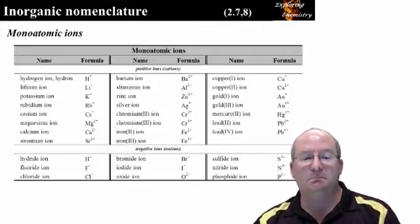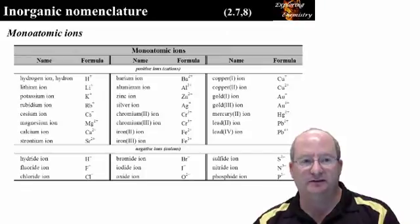These are some common monoatomic ions. For cations, the element name is unchanged, but ion is added at the end.